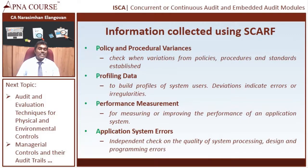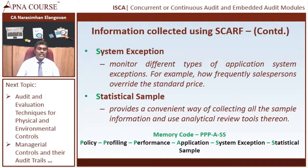The third reason is performance measurement — it is very handy to measure performance and can also be used as a methodology to improve it. Application system errors can be independently identified and independent checks put into place. In addition, any system exceptions can be separately documented — for example, how frequently a salesperson overrides the standard price. Statistical samples can also be taken, where you can analyze the standard deviation, correlation coefficient, etc., and use them for analytical reviews.